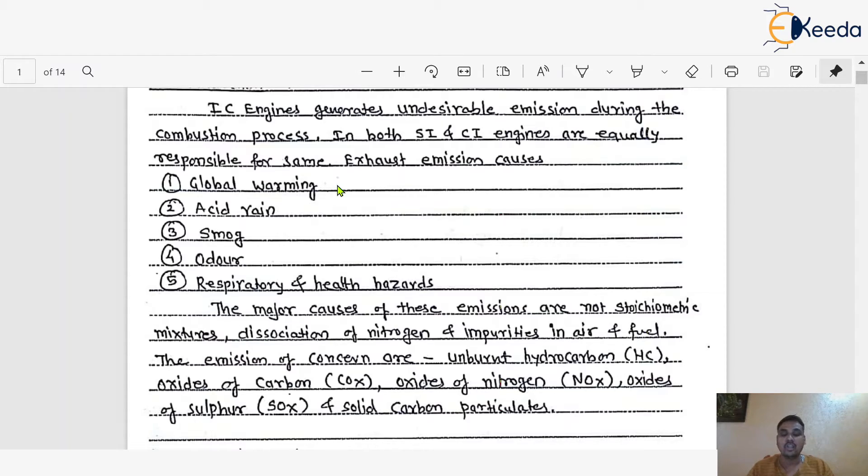This is one of the effects of exhaust emission, and this is nothing but global warming. The second one is acid rain. In some regions, sometimes acid rain will be there, and this is again one of the effects of exhaust emission which is coming out from the incomplete combustion of the IC engine.